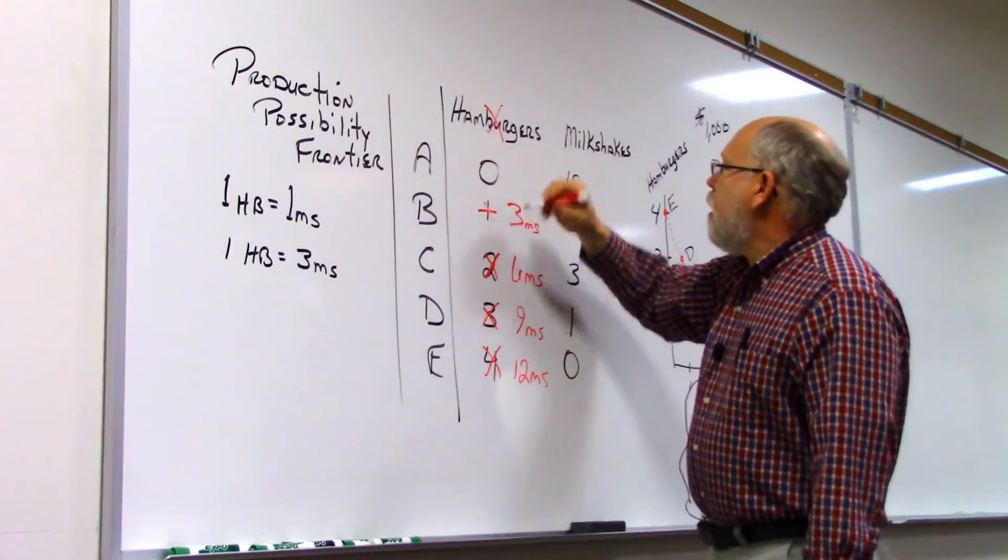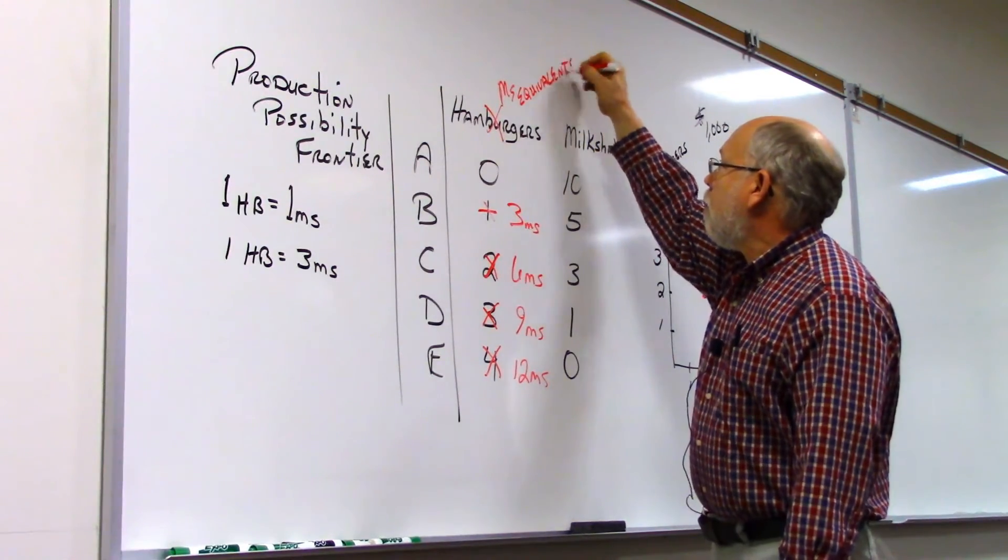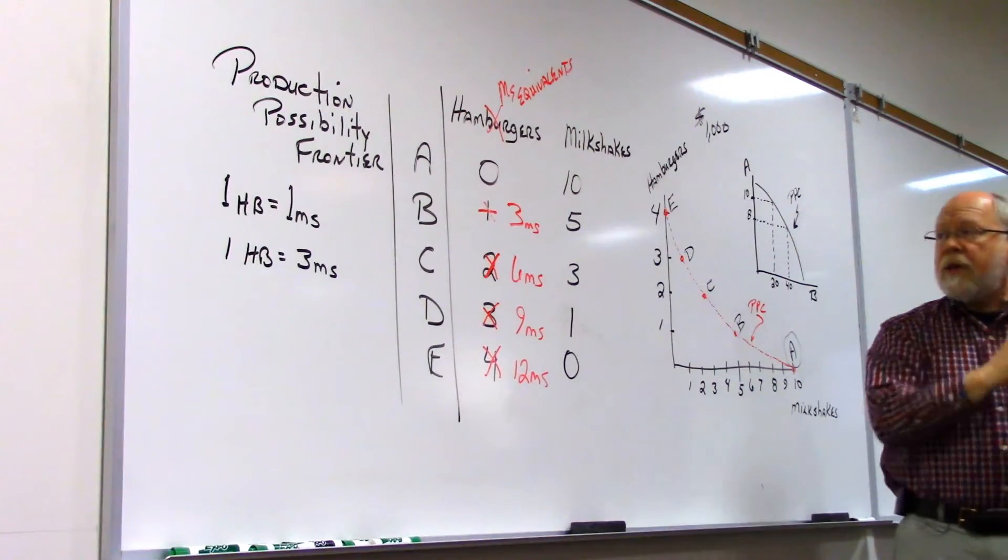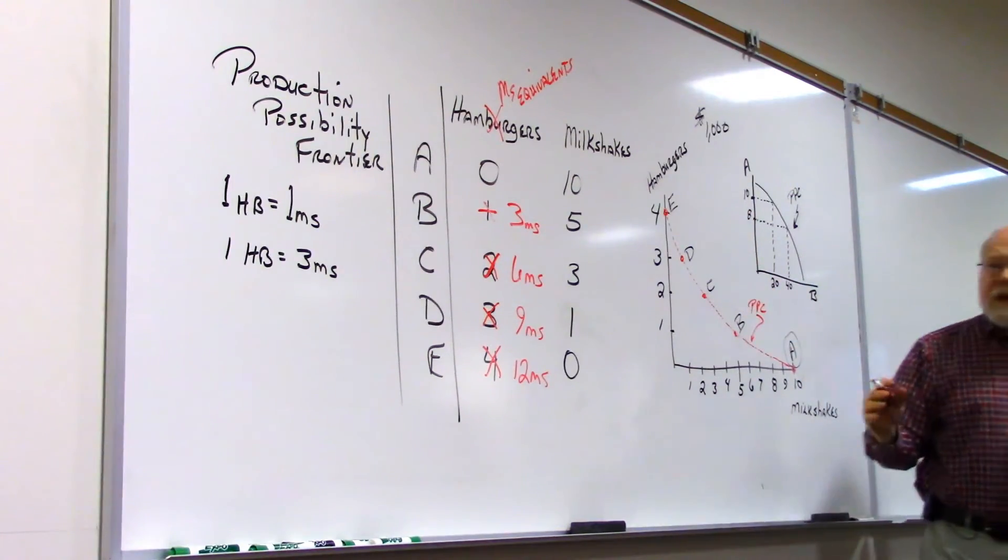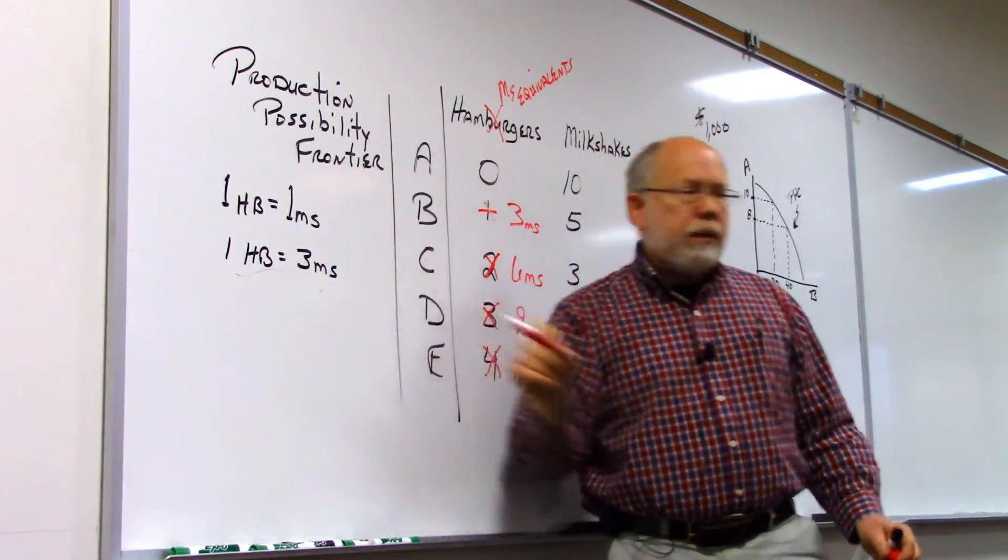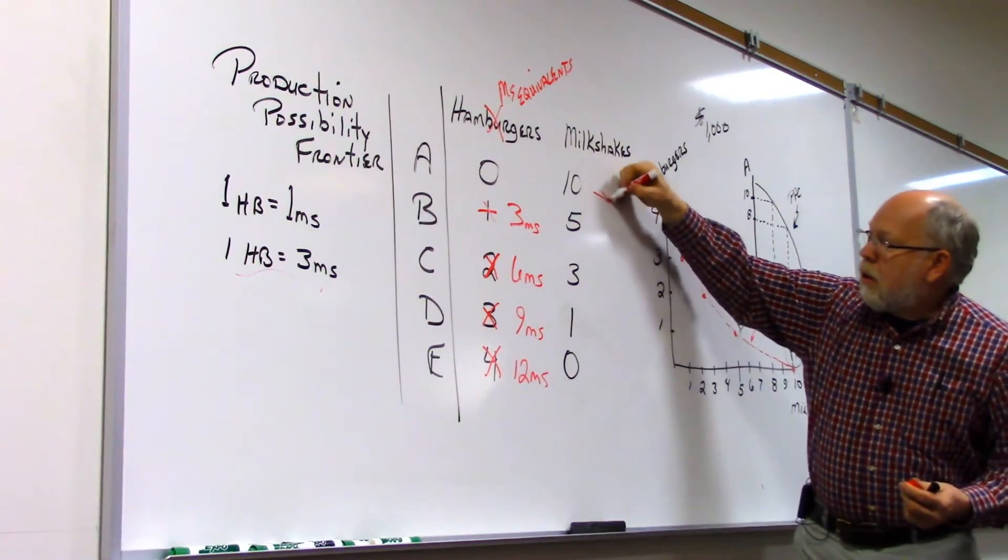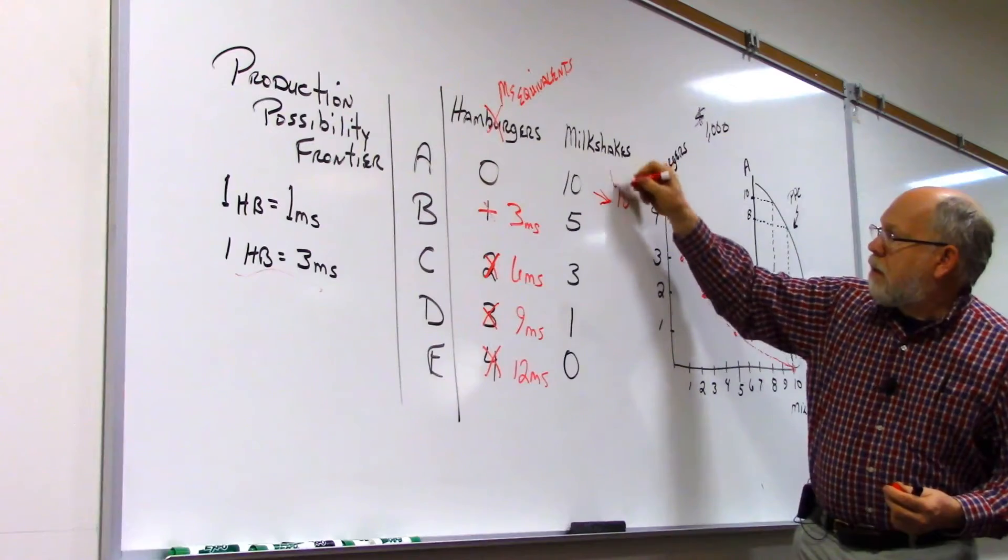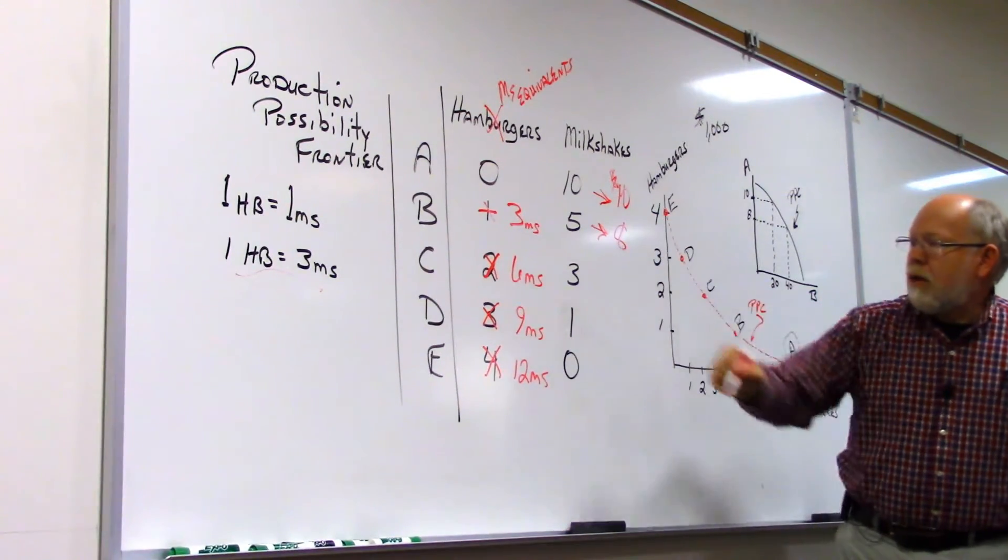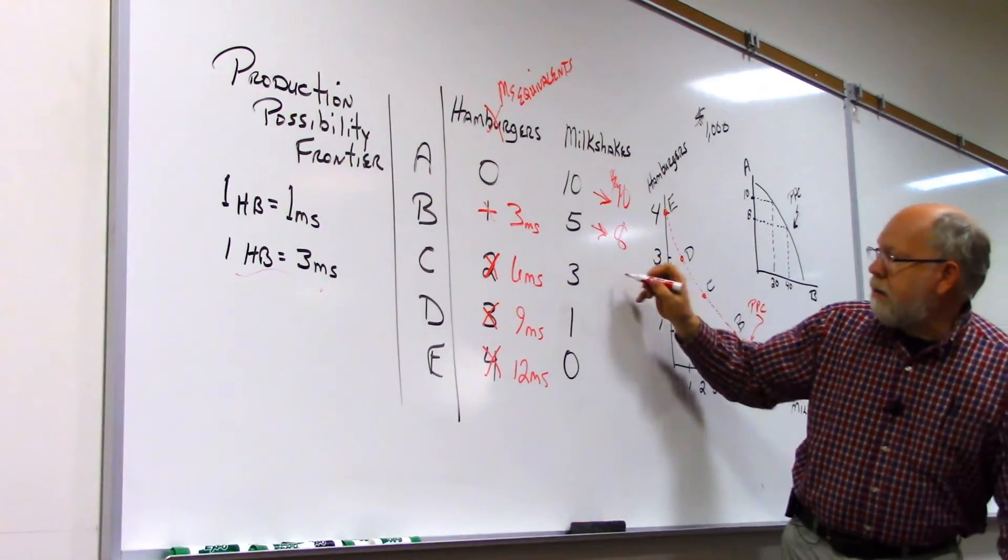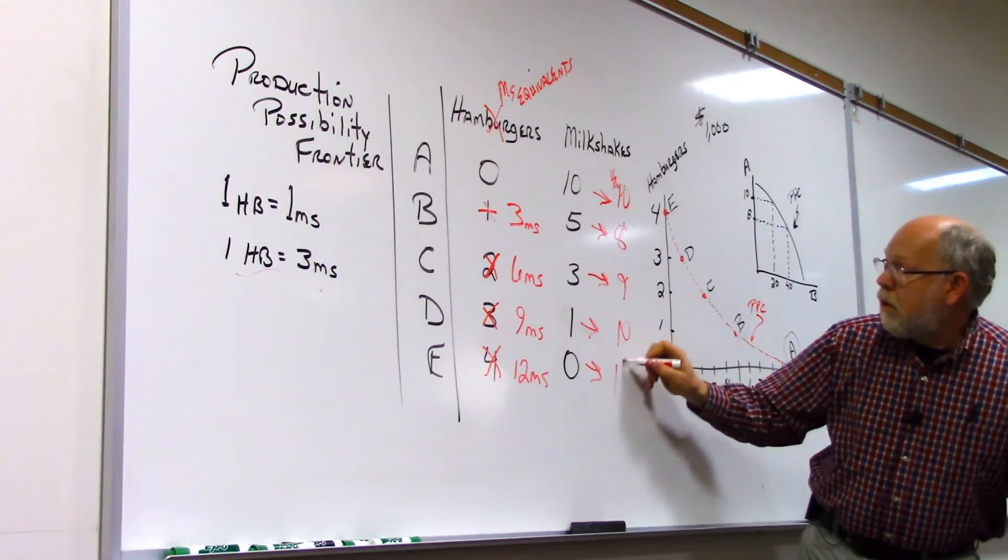Now, if we convert these hamburgers to milkshake equivalents, because we're going to make the hamburgers and immediately trade them for milkshakes, now where would we want to be on our hypothetical production possibility curve, based upon the new price relationship between the two products that we produce. So we can add milkshakes to milkshake equivalents, and up here, we're going to have a total of $10,000. Here we would have $5,678, here we would have $6,000, here we would have $10,000, here we would have $12,000.